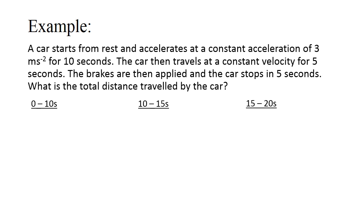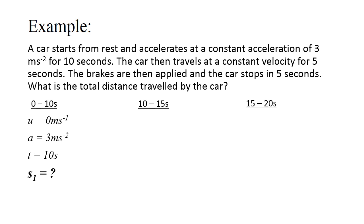For the first stage, list out all the information. Since the car starts from rest, initial velocity u equals to 0. Constant acceleration a equals to 3 metres per second squared, and the time period is 10 seconds. We need to find the displacement S1. Also, since there are three stages, the final velocity of the first stage equals the initial velocity of the second stage. Let's call this V1 — the final velocity of the first stage.